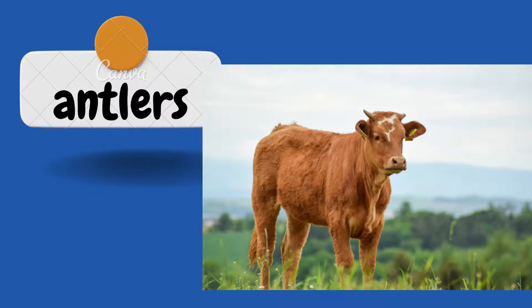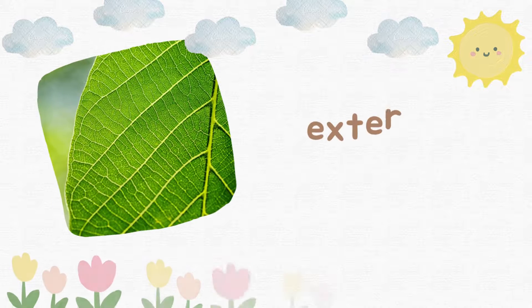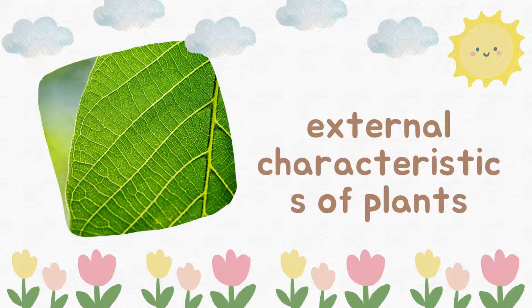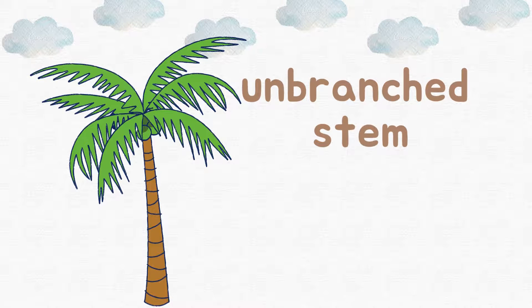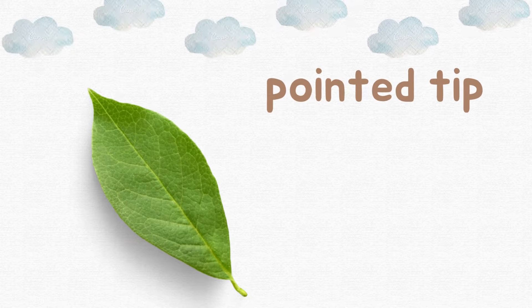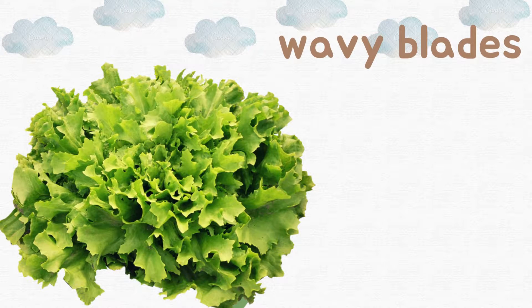These are the external body features that can be easily observed in animals. Now we are going to look at the external features of plants. Plants can have branches and a stem — these trees have a branched stem. This coconut tree has an unbranched stem. Leaves can have leaflets, small leaflets, and a pointed tip.